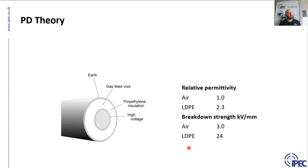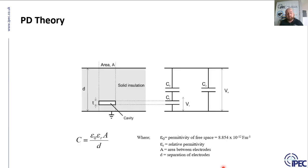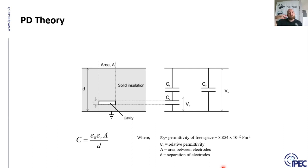The next few slides go through the mathematical side of PD and why they occur. Taking our ideal case — a solid piece of insulation with a perfect defect inside — the reason a PD occurs is not simply because there is gas within the insulation causing a lower insulation level. The problem is that the combination of XLPE or polymer with a different material — an air gap — causes an area of increased localised stress.